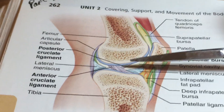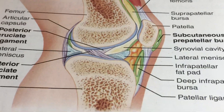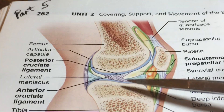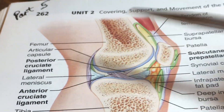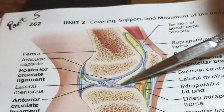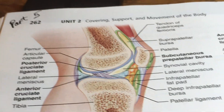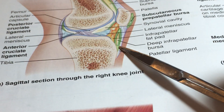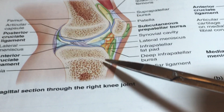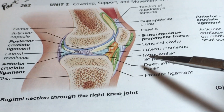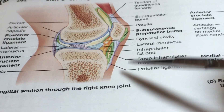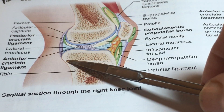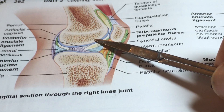From this angle, notice the cruciate ligaments — there are two of them. There's one traveling backwards, which is the posterior, and one traveling in an anterior direction. The anterior cruciate ligament prevents the tibia from being pulled too far forward. This is why in dance, gymnastics, and tai chi you're taught not to bend your knee past the toe of your foot, because that stresses the anterior cruciate ligament.